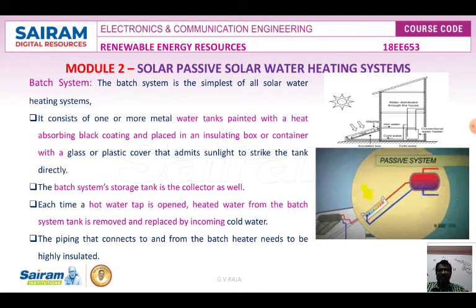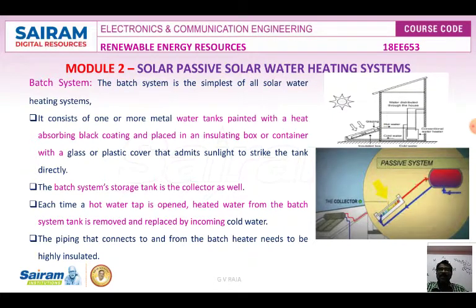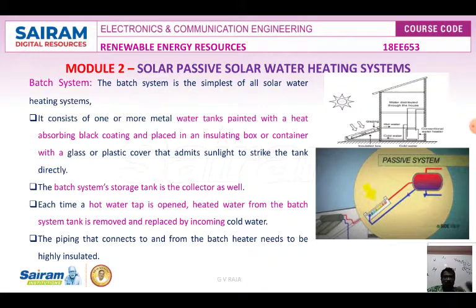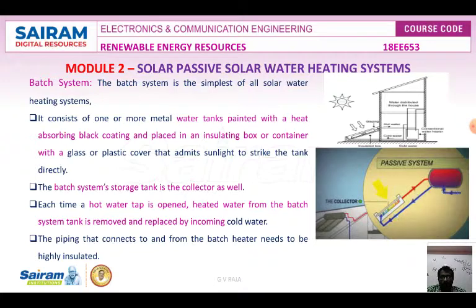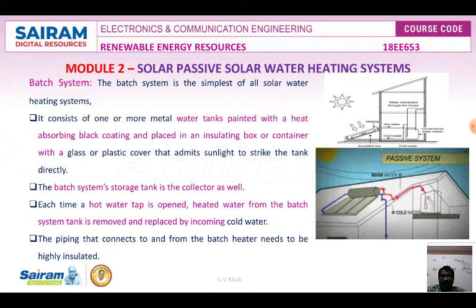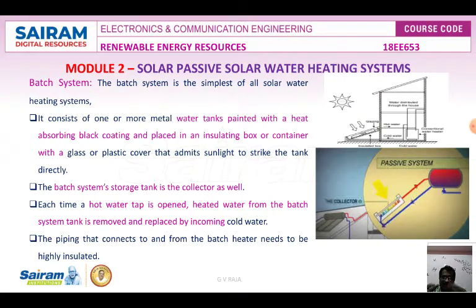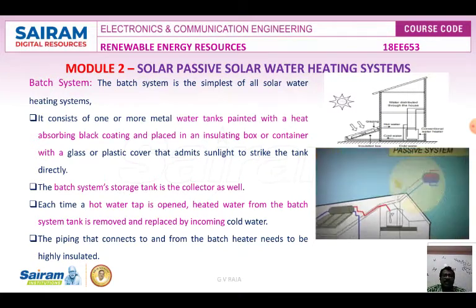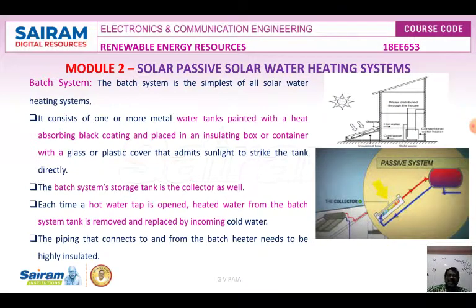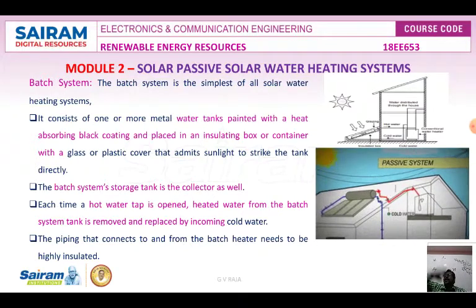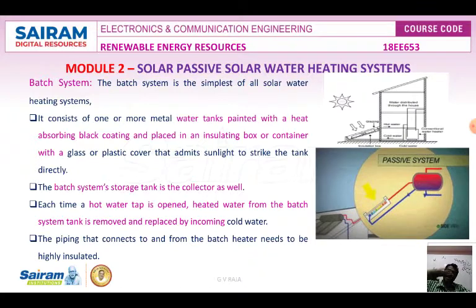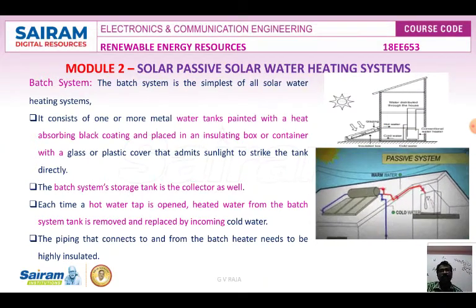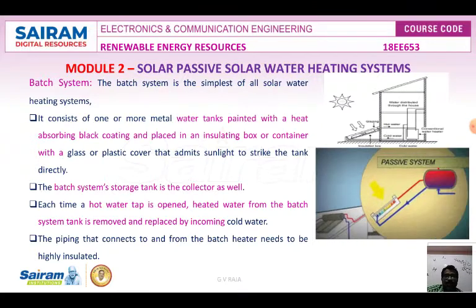There are two types of passive water heating systems: the batch system and the thermosyphon system. The batch system is the simplest of all solar water heating systems. It consists of one or more metal water tanks painted with a heat-absorbing black coating and placed in an insulated box or container with a glass or plastic cover that admits sunlight to strike the tank directly. Above the solar panel, there is a tank coated with black paint — that is the batch storage system.